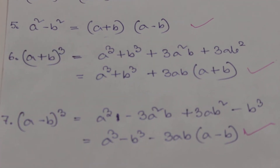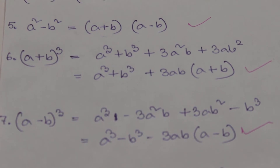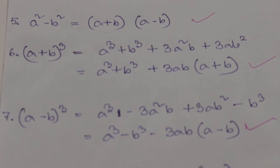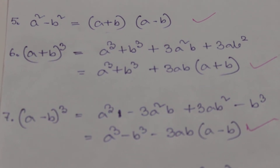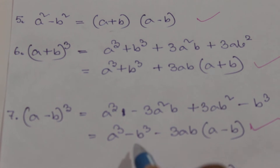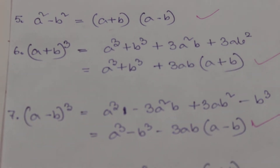The next formula is (a + b) whole cube, that is equal to a cube plus b cube plus 3ab into (a + b). And (a - b) whole cube is a cube minus b cube minus 3ab into (a - b).